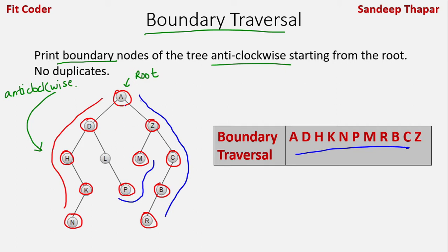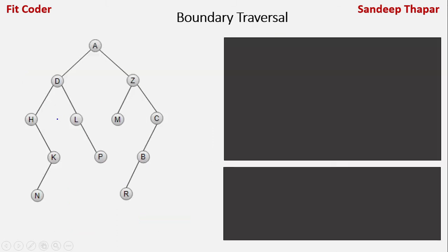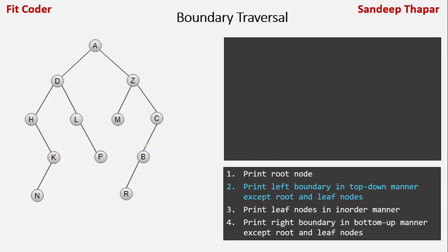For example, node A would appear in both the left boundary and the right boundary, so each node should only appear once. We need to find an algorithm that can print the boundary traversal of any given binary tree. The algorithm has four steps.